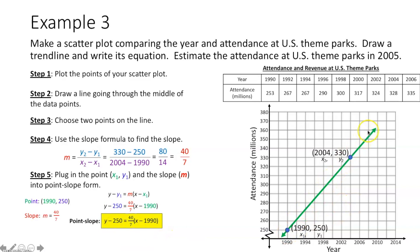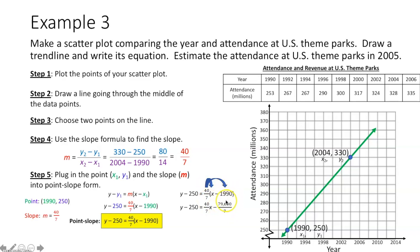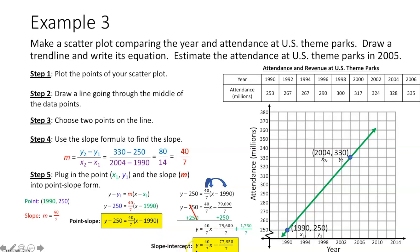We now have the point-slope form of the equation of our green trend line — that's perfectly acceptable. If your teacher requires slope-intercept form, distribute 40/7 to x and to -1990, making -1990 over 1 to multiply numerators and denominators. Then add 250 to both sides — converting 250 to 1750/7 for a common denominator, and adding the fractions together to get the slope-intercept form.